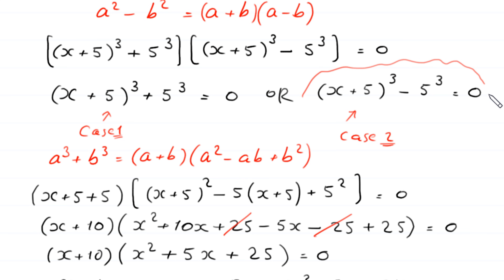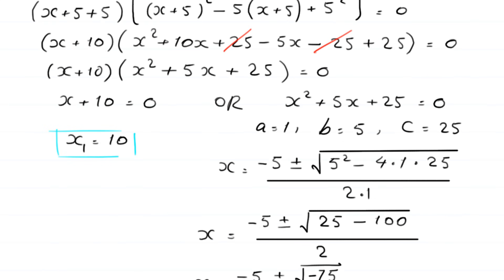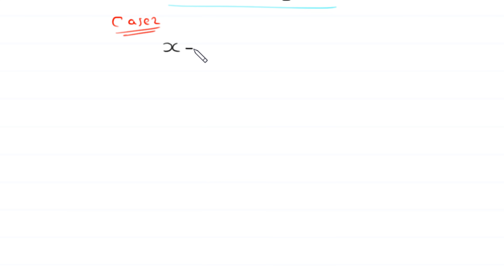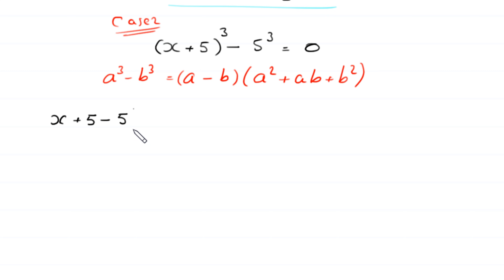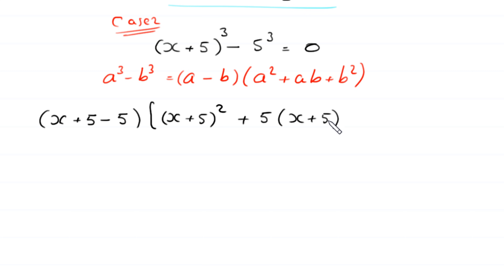Case 2 is (x + 5)^3 minus 5^3 is equal to 0. By using the algebraic identity a³ − b³ = (a − b)(a² + ab + b²), this expression becomes (x + 5 − 5) times [(x + 5)² + 5(x + 5) + 25] is equal to 0.